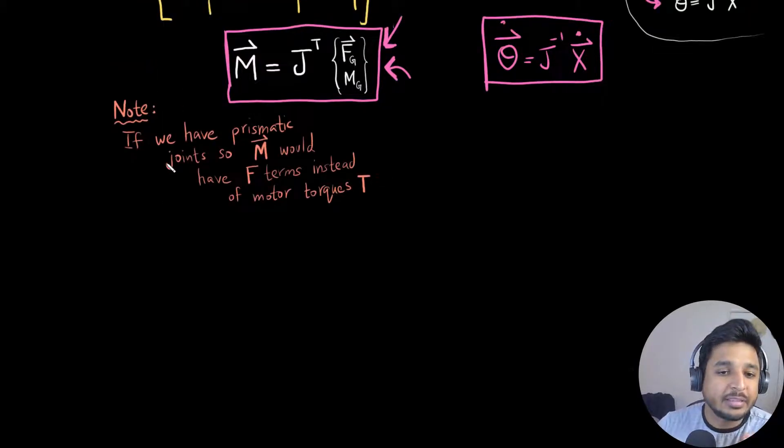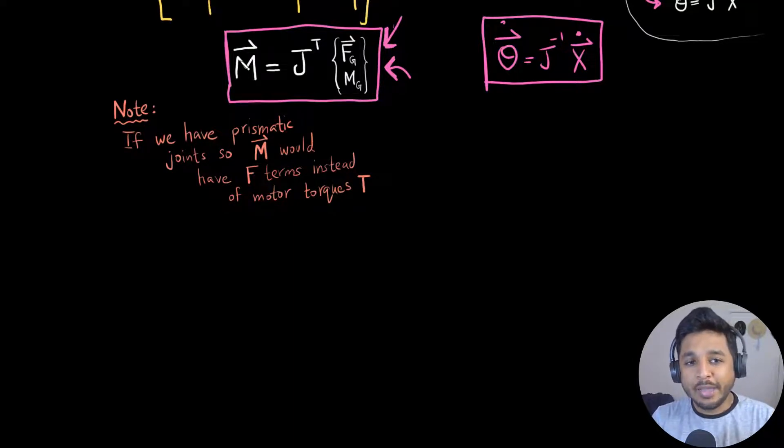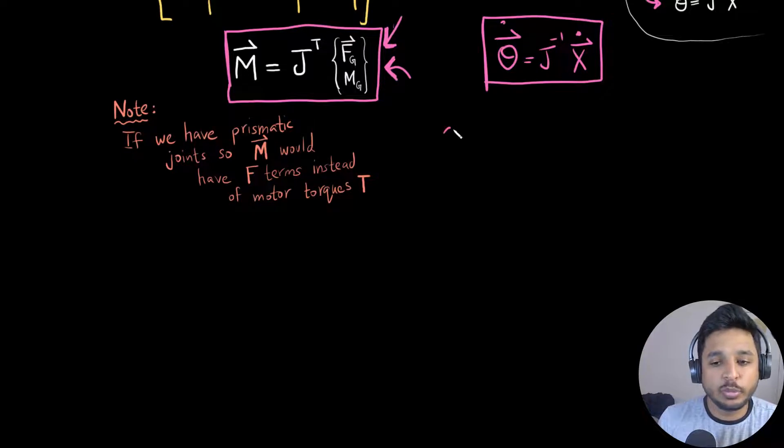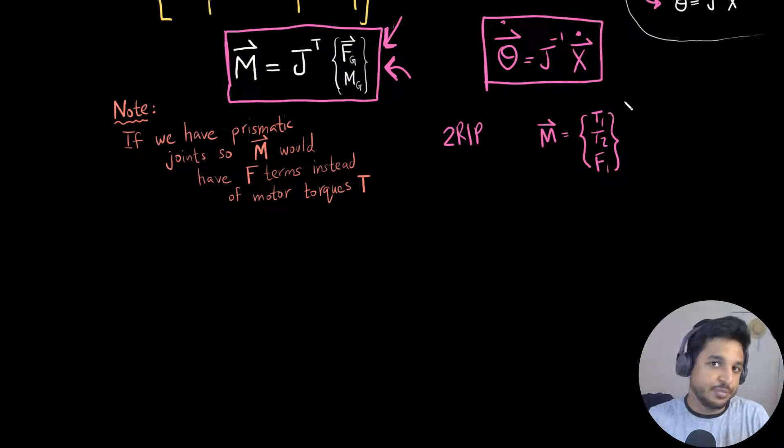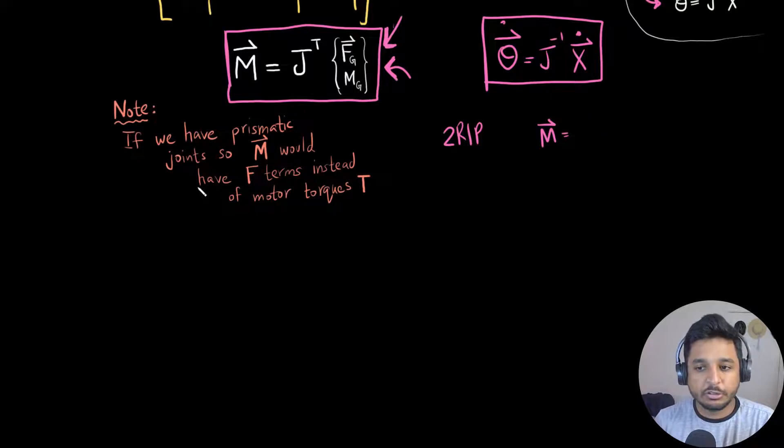However, one thing that you have to keep in mind is that this vector m, which is my motor torque vector, is because I was dealing with a 3R robot, so it had three different motors at each of the revolute joints. In the case, let's say it becomes a 3P robot with all these three prismatic joints, I would no longer have the torque inside this vector, but it would be like the force of the actuation for those prismatic joints. Similarly, if I have a robot which is 2R1P, this m matrix would have t1, t2, the two torques for the two revolute joints, and f1, which is the force for the prismatic joint.